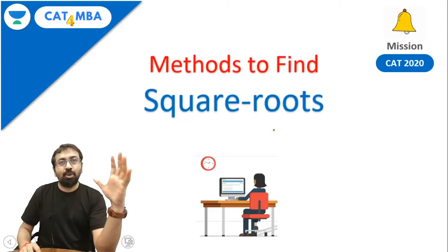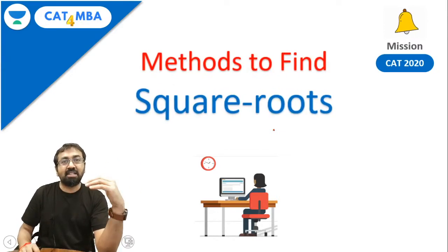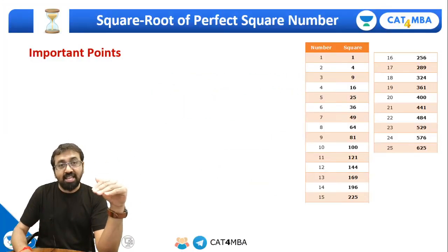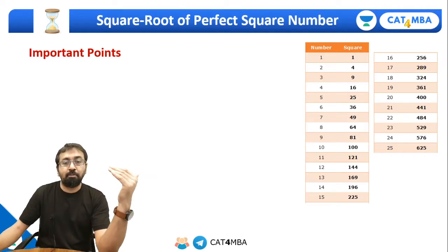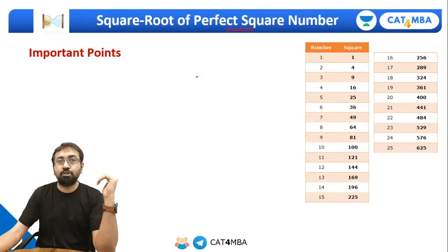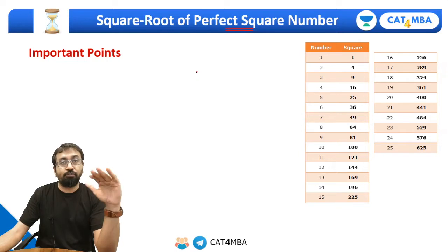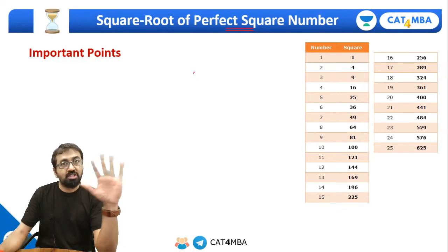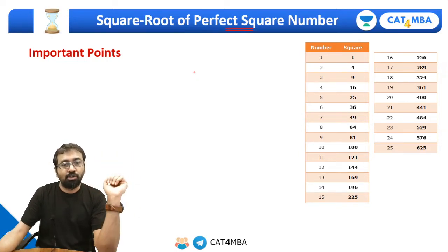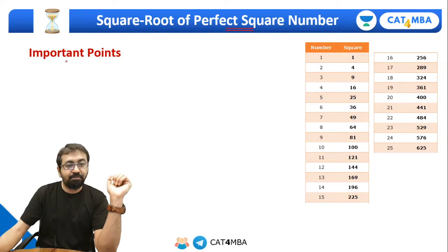Now let's quickly understand some methods to find out square roots. I can find square roots of a perfect square number, or I may have to find an approximated square root of a non-perfect square number. These are the two methods we are going to learn in this video.